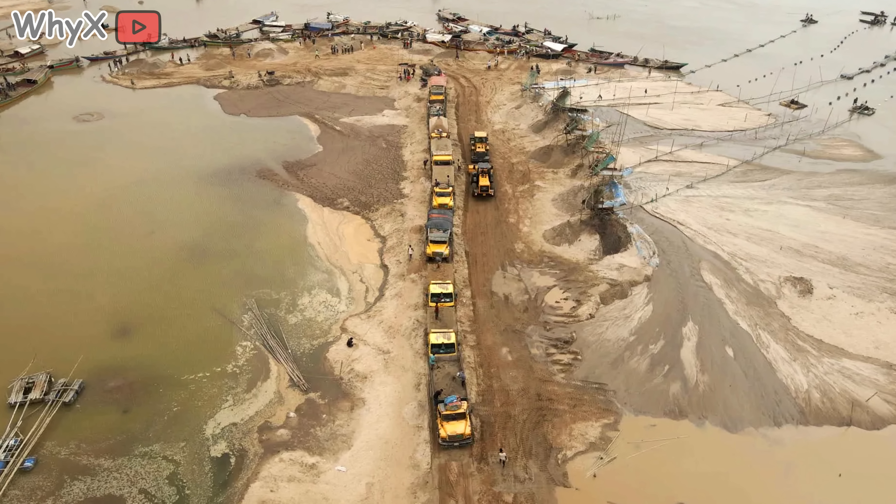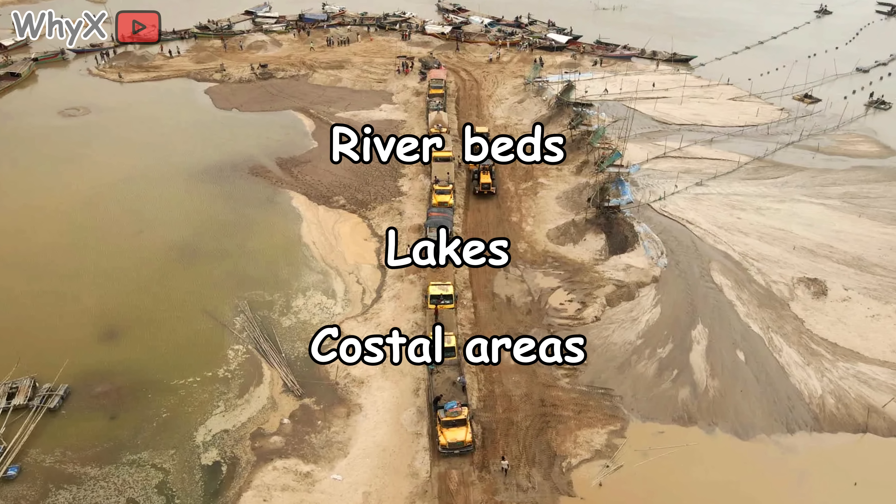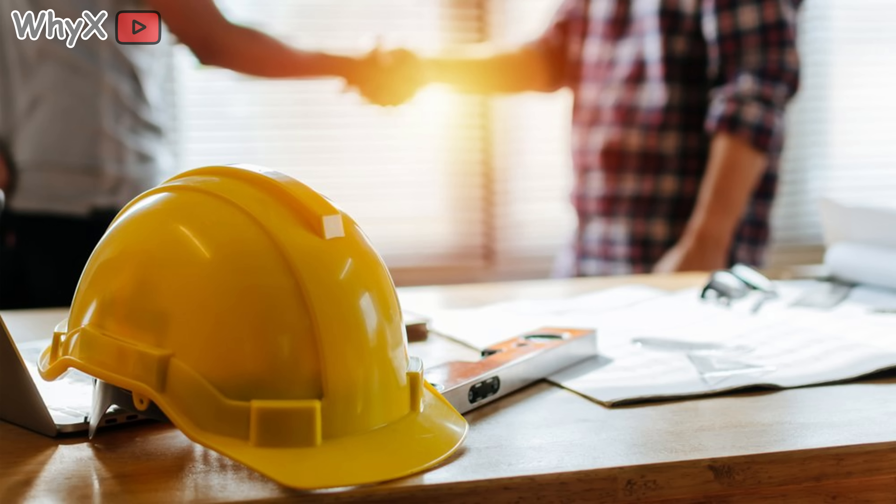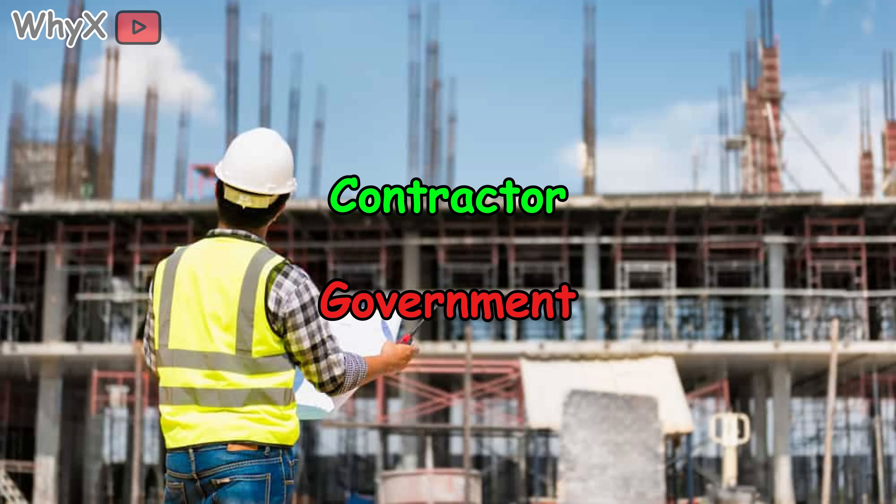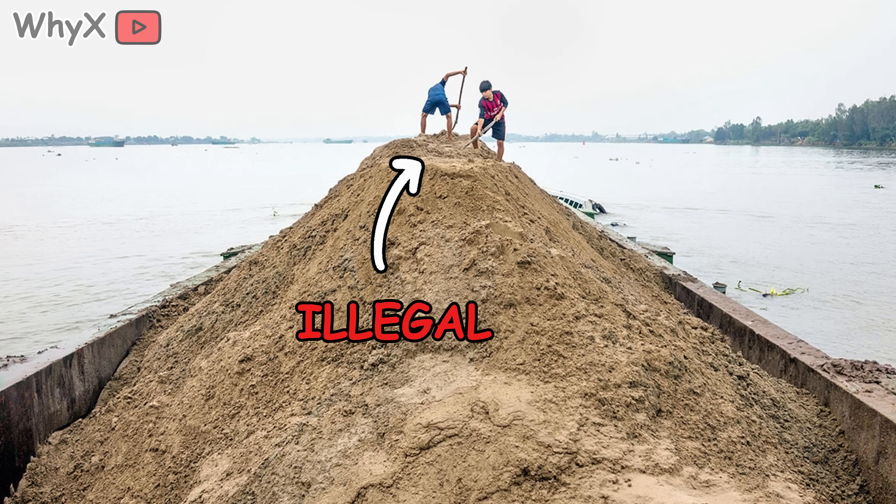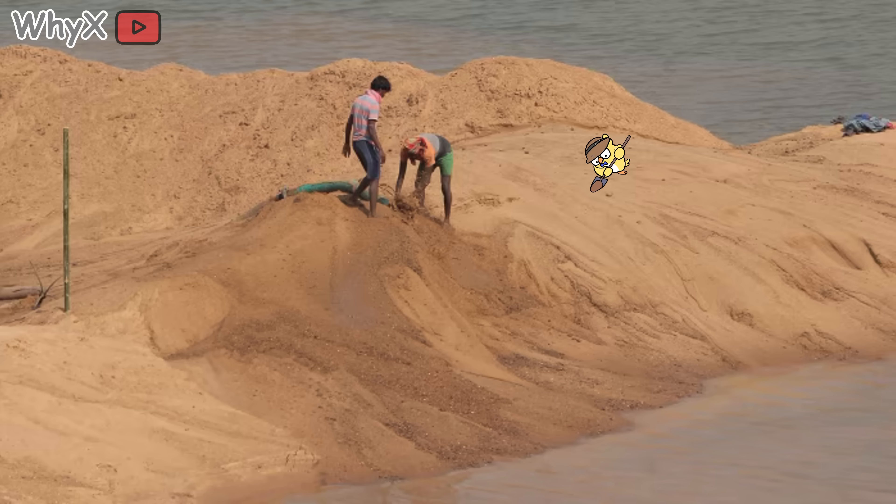Legal sand mining usually takes place in riverbeds, lakes, and coastal areas. Miners scoop out sand using dredgers, boats, or trucks, and then sell it to contractors and governments. But here is the problem. The demand far exceeds the legal supply. So illegal miners step in, and when they do, they often strip away sand faster than nature can replenish it.